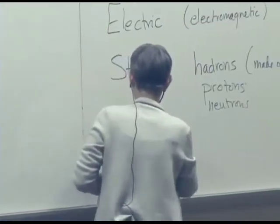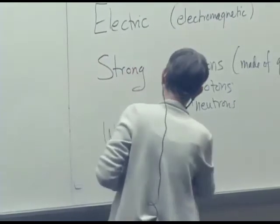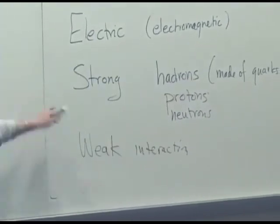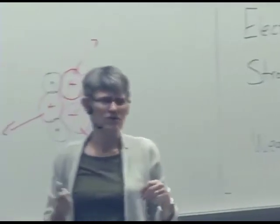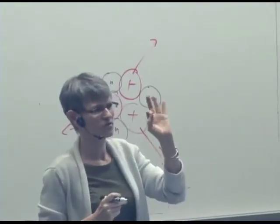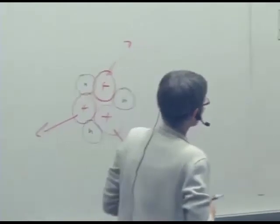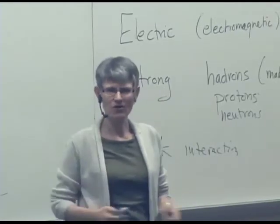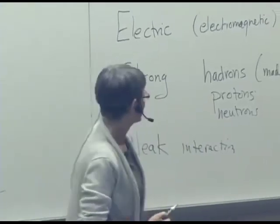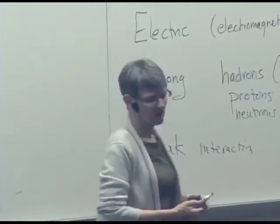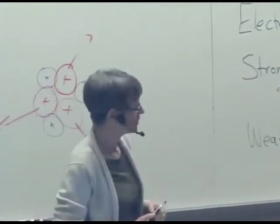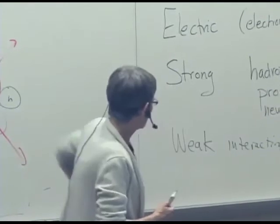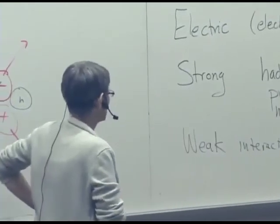And then there's another interaction called the weak interaction. Both things that are made of quarks and things that aren't made of quarks, things like electrons, which are called leptons or neutrinos, interact through the weak interaction, but they indeed interact so weakly that for a long time no one knew it was there. It was hard to discover this interaction. And so there are some examples of this, but these are harder to study.